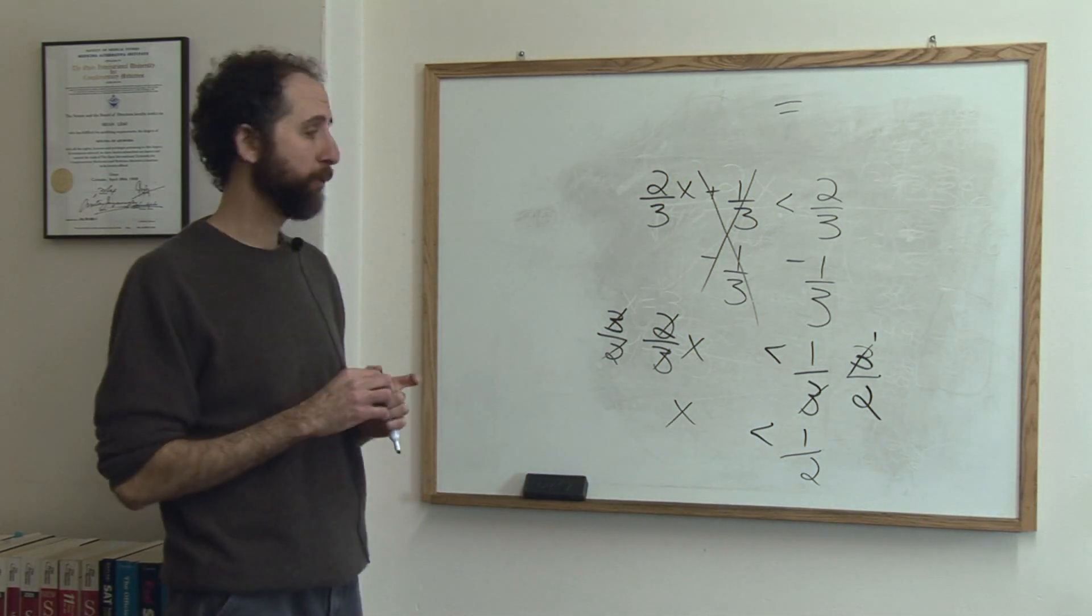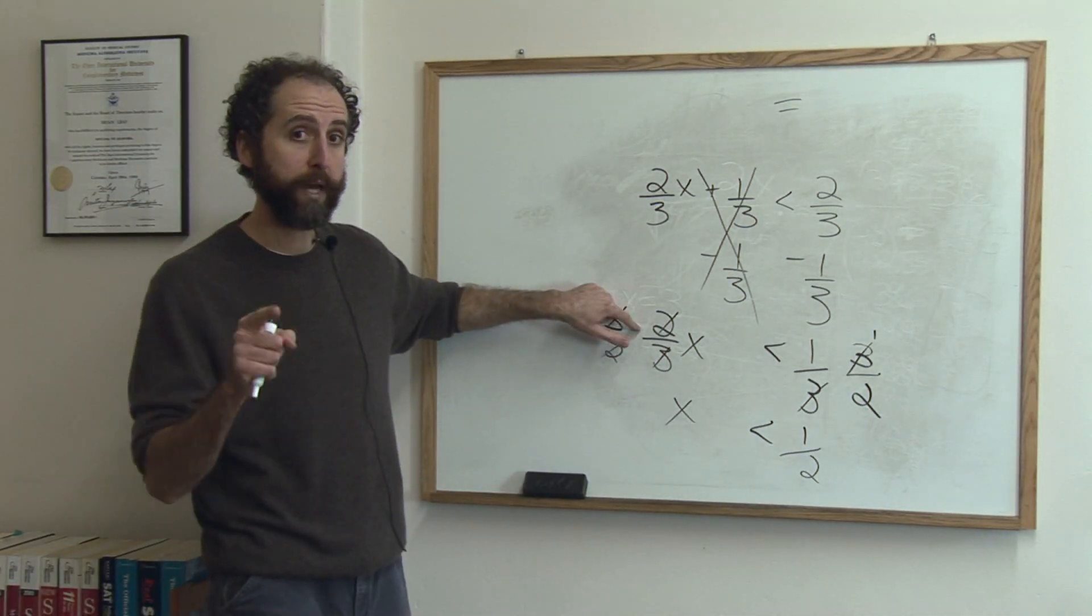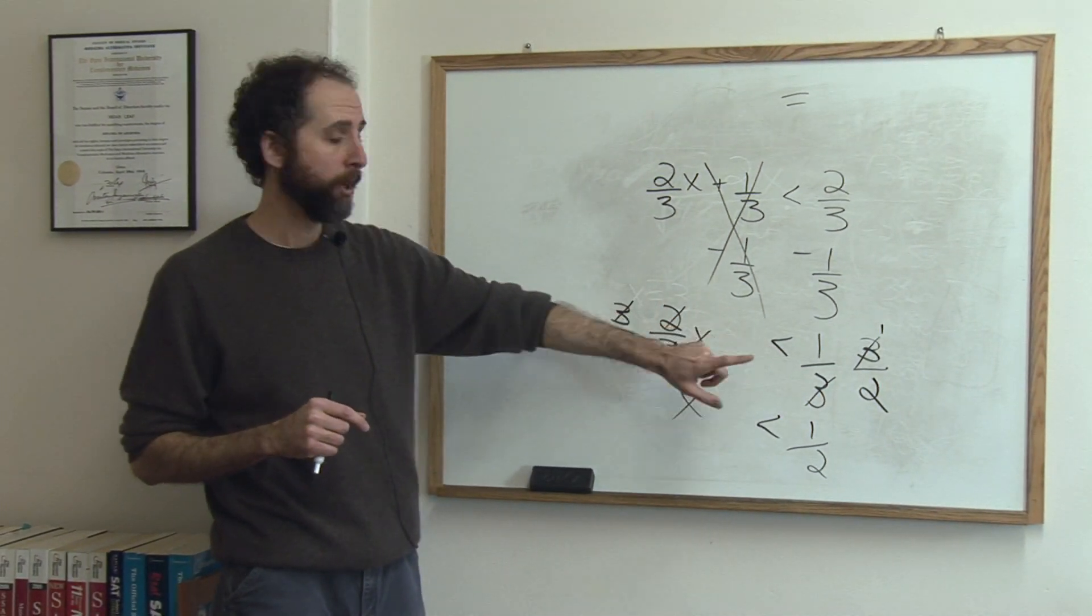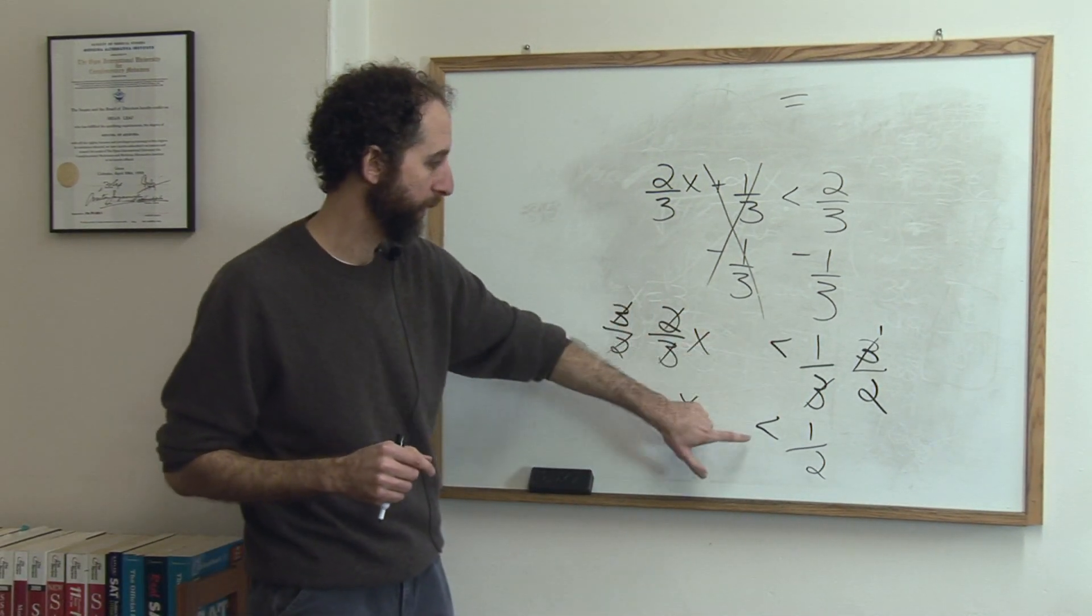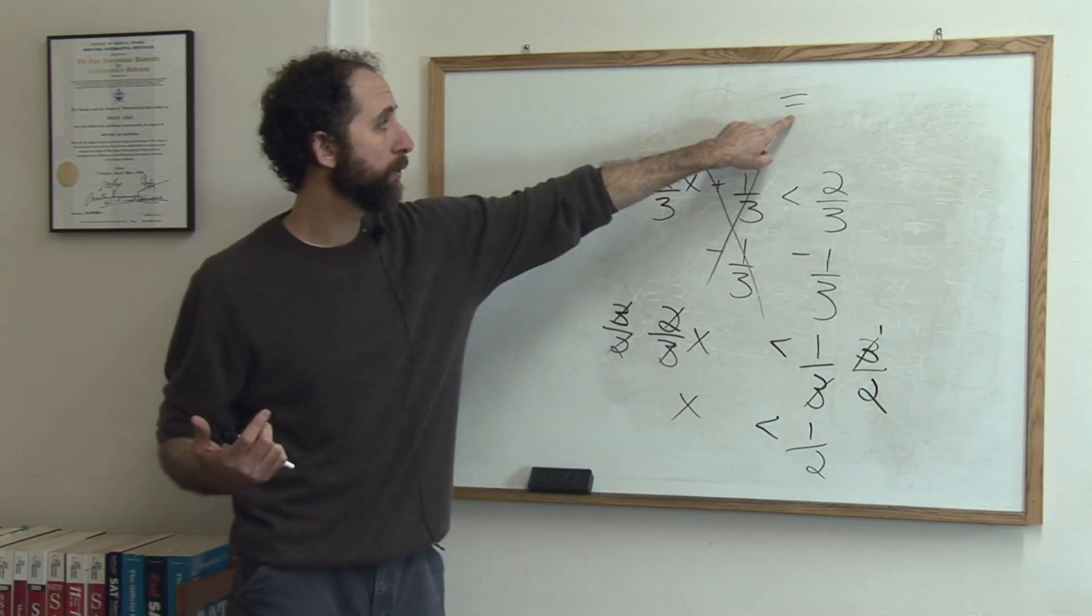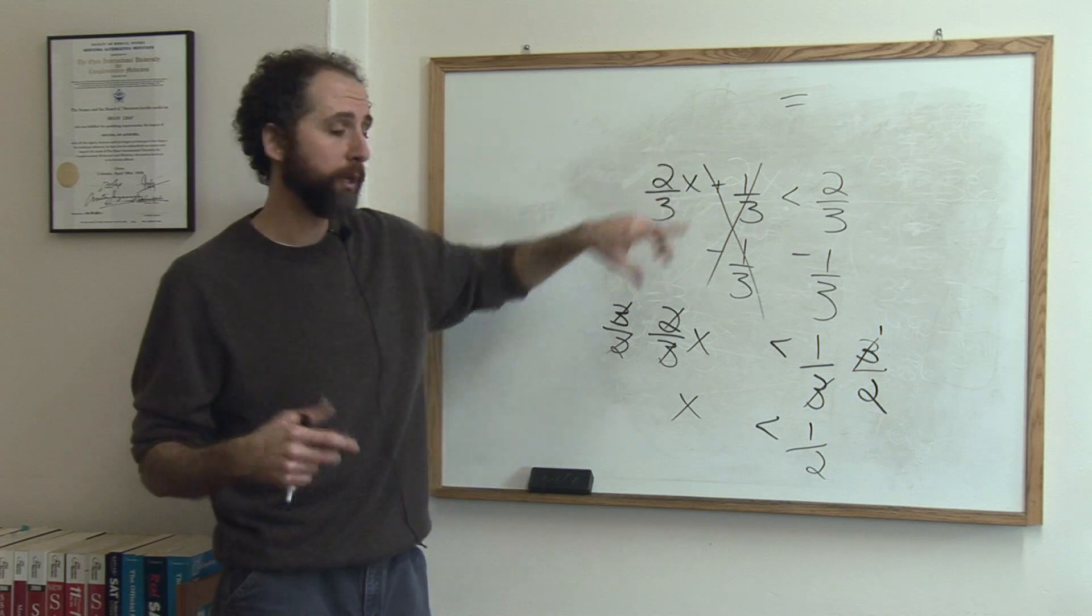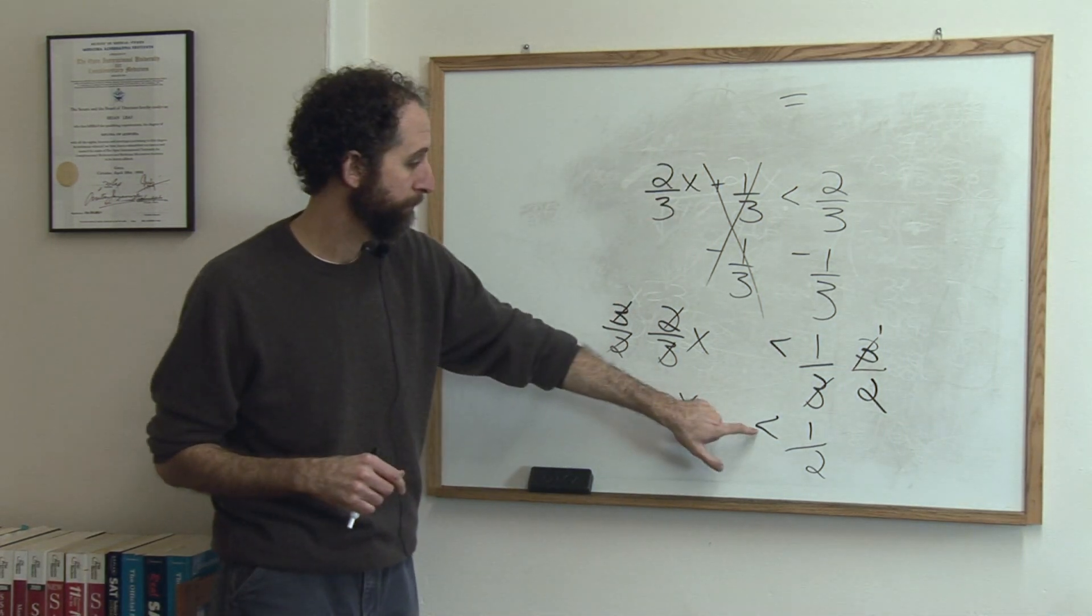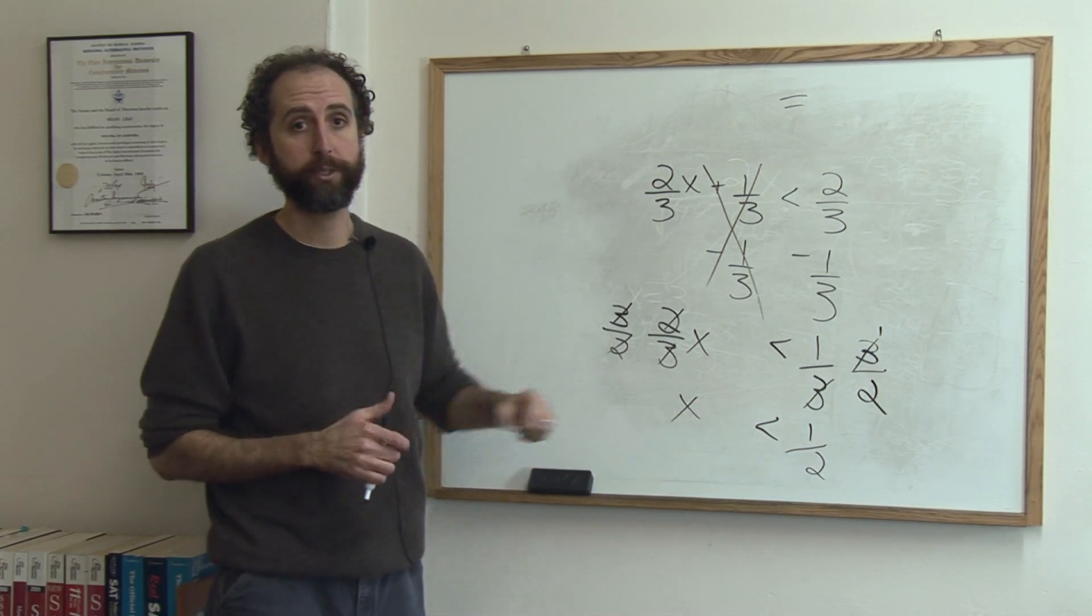The only trick to remember with these is if we had had a negative sign here. If you divide or multiply by a negative sign in your inequality, then you have to flip the inequality sign. The less than would have become greater than. Otherwise you really just treat this like a normal equation. The one trick is if you multiply or divide by a negative number, then you're going to swap, you're going to make that the opposite sign.